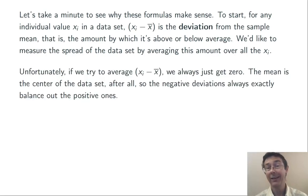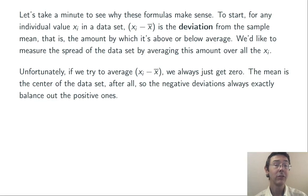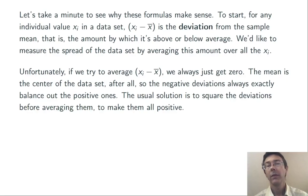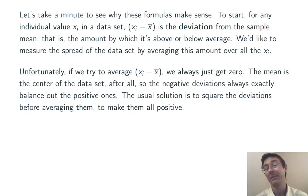Unfortunately, if we try and do that, we always end up getting zero. xi minus x-bar has an average value of zero over all the xi's, and the reason is simple: the mean, x-bar, is the center of the data set, so the positive deviations always exactly balance out the negative ones. The problem is that we're allowing a below-average xi to reduce our measure of variability, when varying from the mean by a lot in a negative direction is just as bad as varying by a lot in a positive direction.